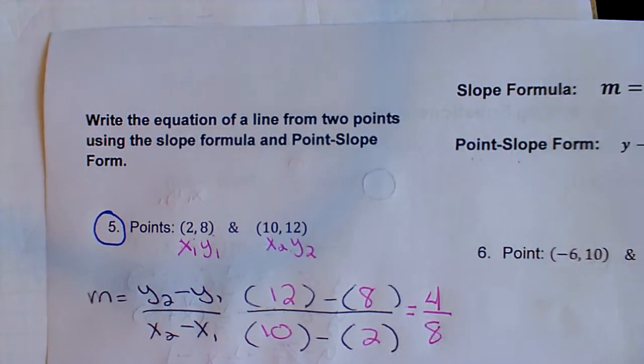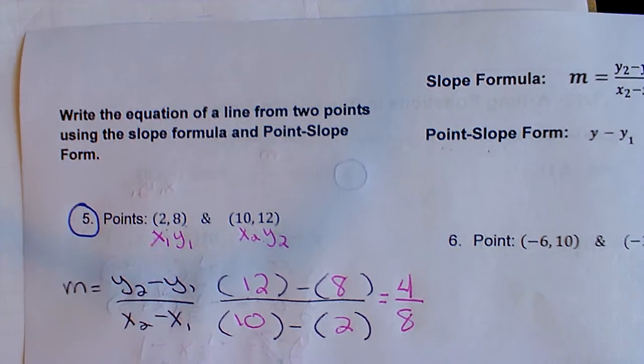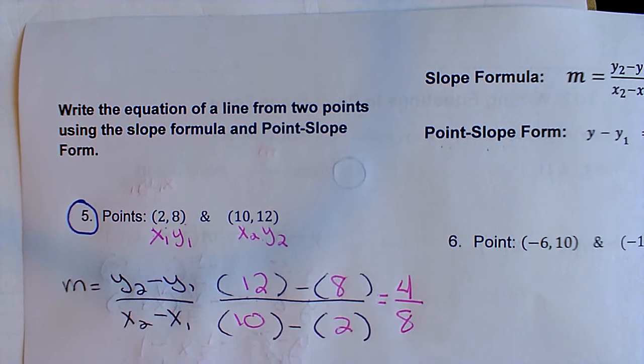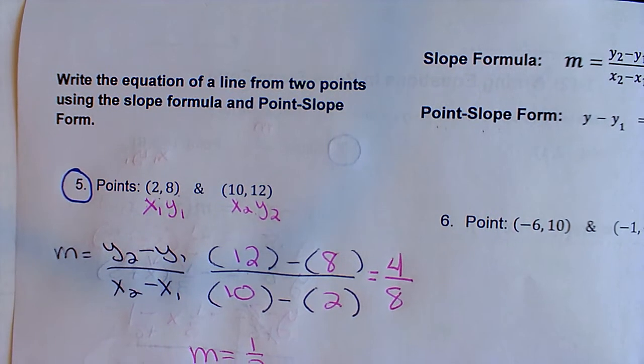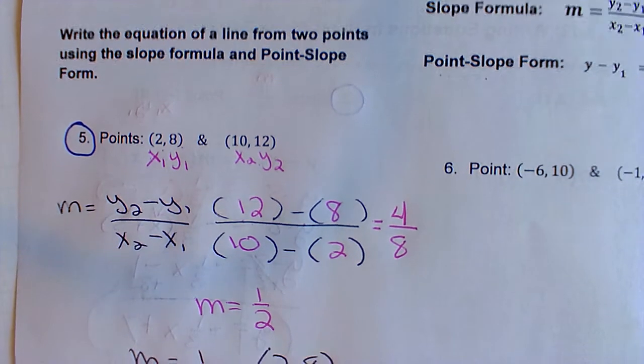When you look at the back, this time you're going to be writing the equation of the line given two points. Well, to use the point-slope formula, you've got to have a point and the slope. So what we are going to do is use the slope formula first, and then we can do point-slope.